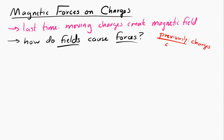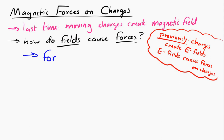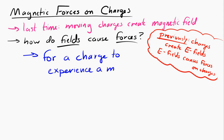The difference here is that a magnetic field can only cause a magnetic force on a moving charge. So in order for a charge to experience a magnetic force, it must be moving within a magnetic field.